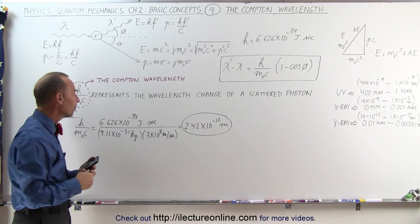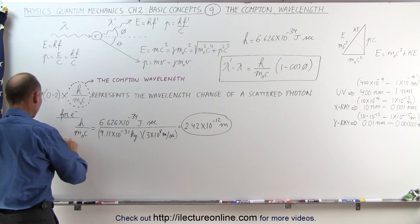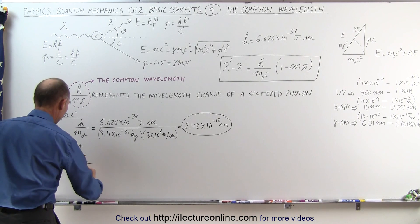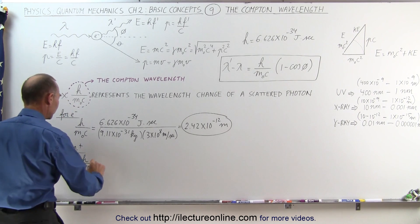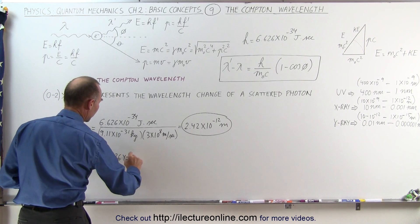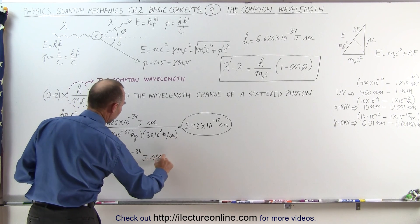Now let's calculate this number using a proton. So for a proton, and I'll write a p-plus for proton, we get h over mc, or m sub not c, is equal to 6.626 times 10 to the minus 34 joules times seconds,